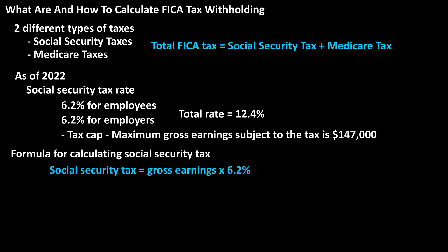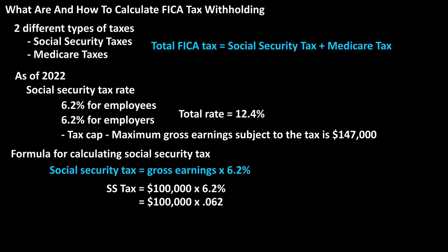The formula for calculating this tax for an employee is: Social Security tax equals gross earnings times 6.2%. As a quick example, if someone earns $100,000, their Social Security tax would be $100,000 times 6.2%, which must be changed to a decimal by dropping the percent sign and moving the decimal two places to the left to get 0.062. So $100,000 times 0.062, which equals $6,200.